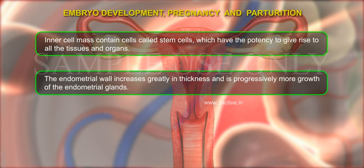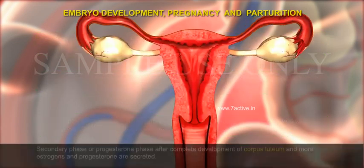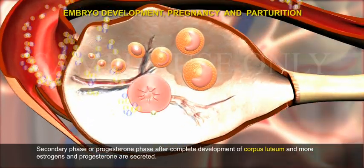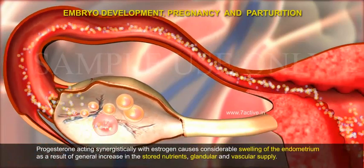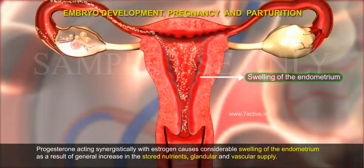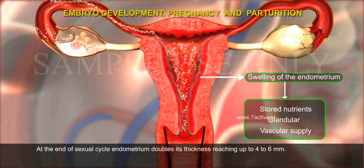The endometrial wall increases greatly in thickness with progressive growth of endometrial glands and blood vessels. Up to the end of this proliferative phase, the endometrium increases 2-3 mm in thickness in human females. In the secondary phase, or progesterone phase, after complete development of the corpus luteum, more oestrogens and progesterone are secreted, causing considerable swelling of the endometrium. At the end of the sexual cycle, the endometrium doubles its thickness, reaching up to 4-6 mm.